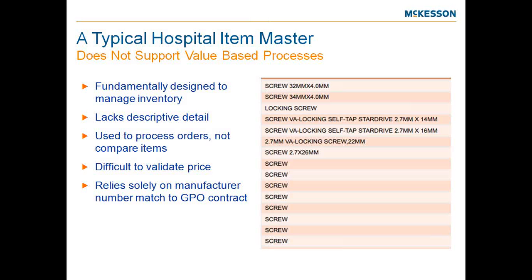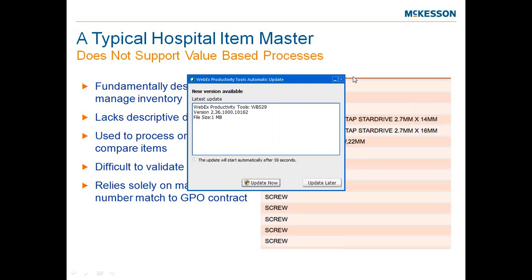The information on screen shows actual descriptions within MMIS systems — all within a single MMIS. How do I know the differentiation between all those different screws? Those are separate items. It's very difficult. We're really relying in many cases on the manufacturer number match to get the GPO contract. A lot of add-on systems throw that information through an engine and return anything that matches. We need to be a little bit more granular and distinct in that information.